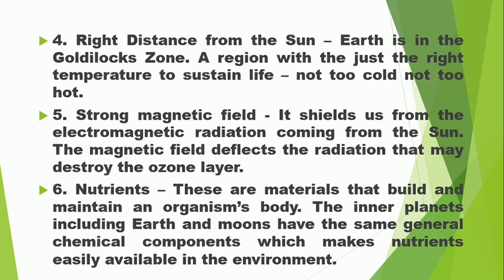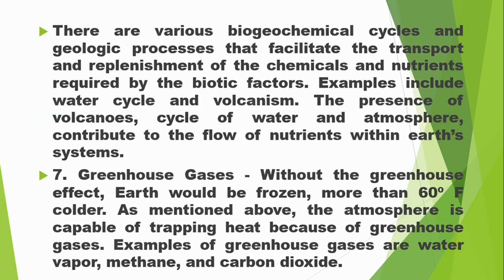Sixth, nutrients. These are materials that build and maintain an organism's body. The inner planets, including Earth and moons, have the same general chemical components, which makes nutrients easily available in the environment. There are various biogeochemical cycles and geologic processes that facilitate the transport and replenishment of chemicals and nutrients required by the biotic factors. Examples include the water cycle and volcanism. The presence of volcanoes, the cycle of water, and the atmosphere contribute to the flow of nutrients within Earth's system.